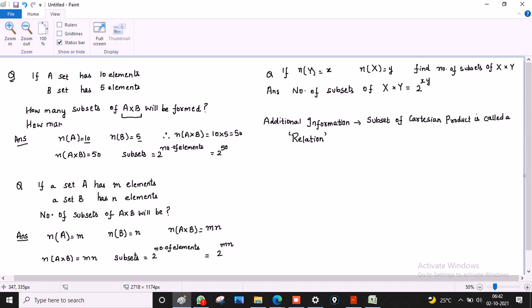How many relations from A to B are possible? So 2 raised to power 50 relations.